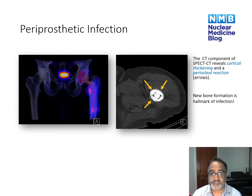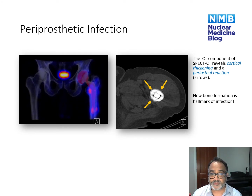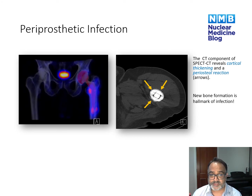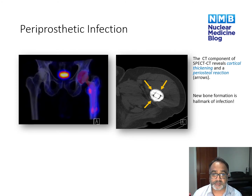Periprosthetic infection has a very different uptake pattern — uptake is usually much more diffusely distributed around the prosthesis. On the CT component, we may see cortical sclerosis, thickening, and an aggressive periosteal reaction. New bone formation is the hallmark of infection; when you see that, you must consider infection as a possible cause.